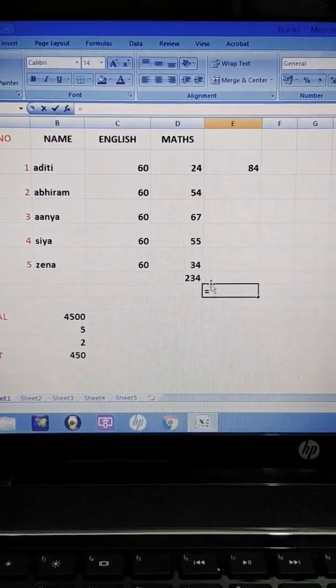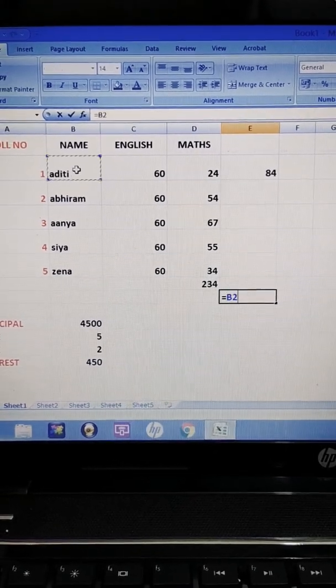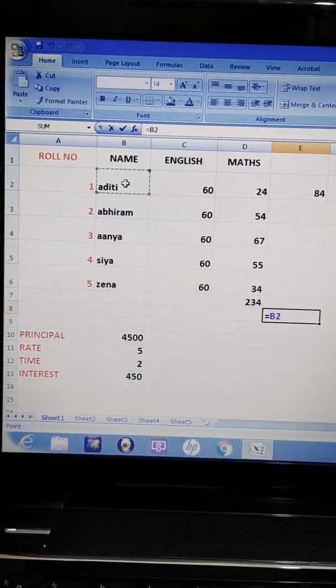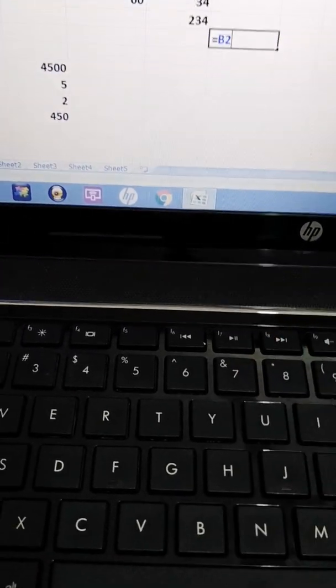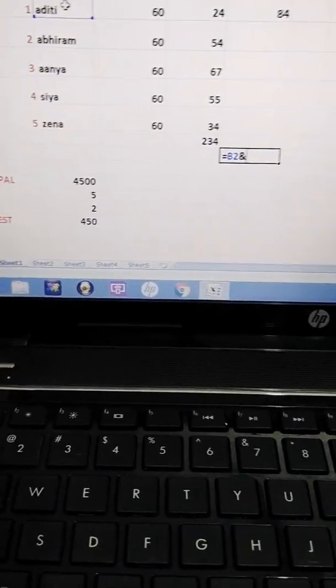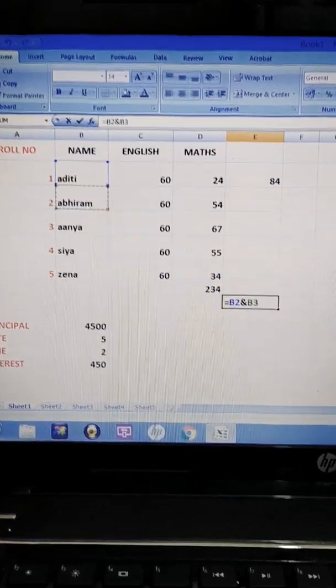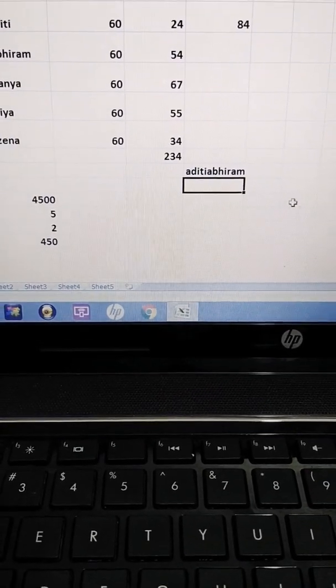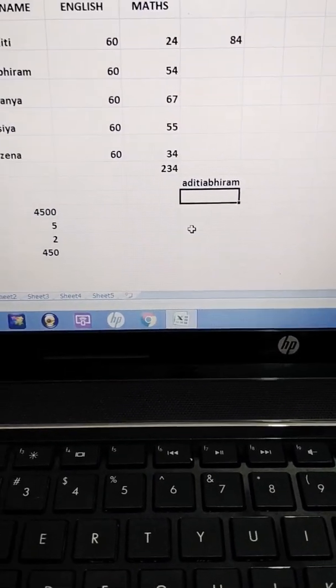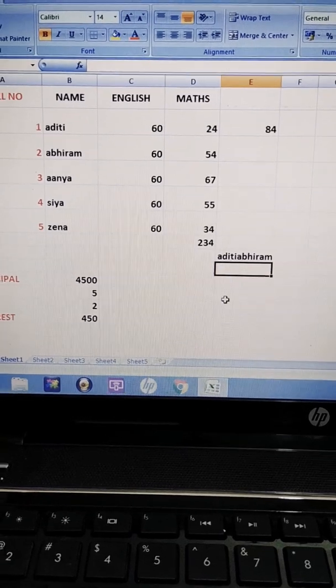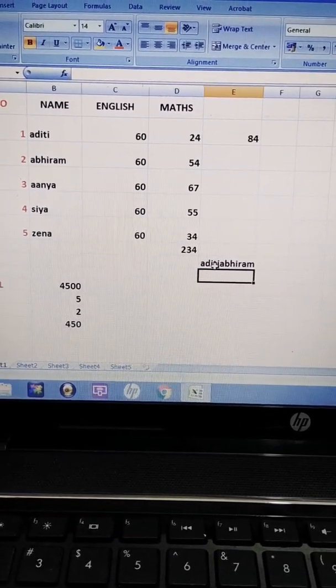Is equal to this is string Aditi, B2 has come. I have selected that cell. Now ampersand sign, this one. Shift 7, ampersand sign has come. And select any other name B2 and B3. Put enter sign. Aditi Abhiram.